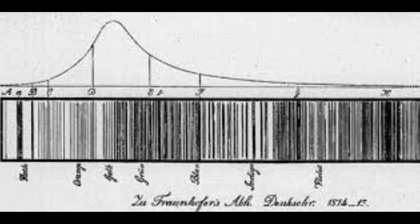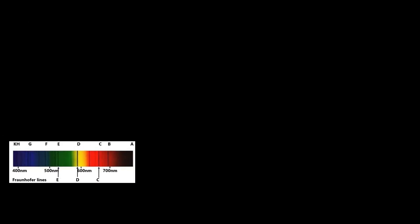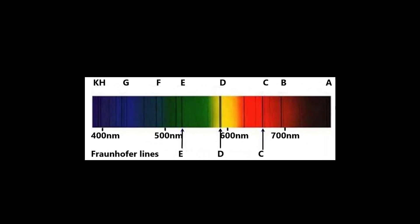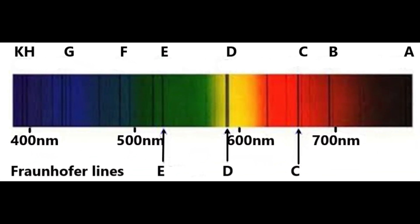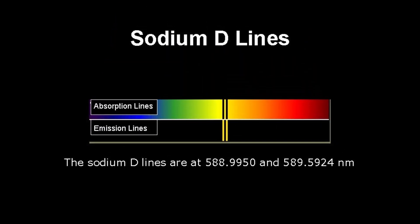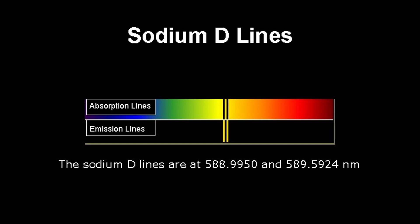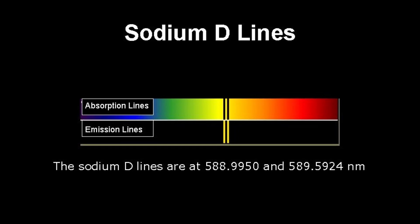He meticulously catalogued the exact wavelength of each dark line, which are still known today as Fraunhofer lines, and labeled the strongest of them with letters. Many of these labels, such as the sodium D lines, are still used today.